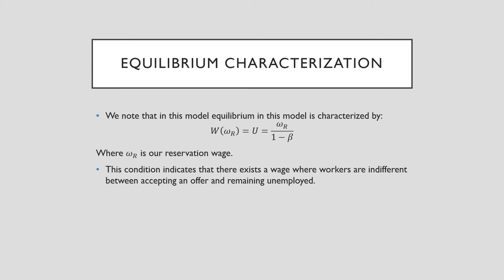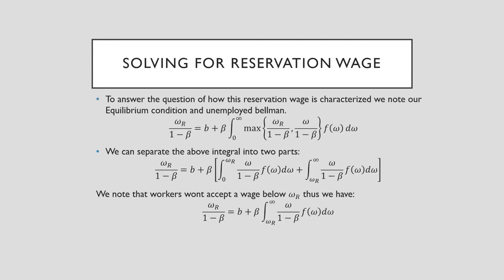Note that equilibrium in this model is characterized as follows, where omega_R is our reservation wage. This condition indicates that there exists a wage where a worker is indifferent between accepting an offer or remaining unemployed. To answer the questions of what this reservation wage is and how it's characterized, we note our equilibrium condition and our unemployed Bellman equation, and we put our equilibrium condition on the left-hand side and our unemployed Bellman on the right-hand side.